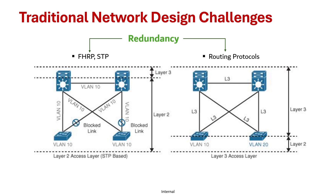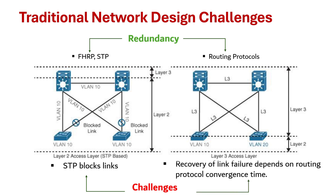These types of designs introduce challenges. For example, in a layer 2 access layer, spanning tree blocks links to prevent layer 2 loops, whereas in a layer 3 design, recovery during any link or switch failure depends on the convergence of the routing protocols used, which can take time.